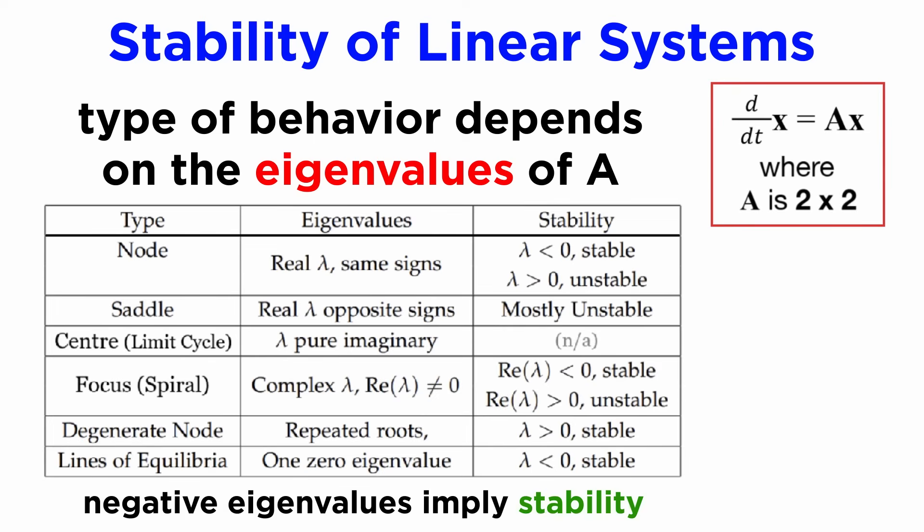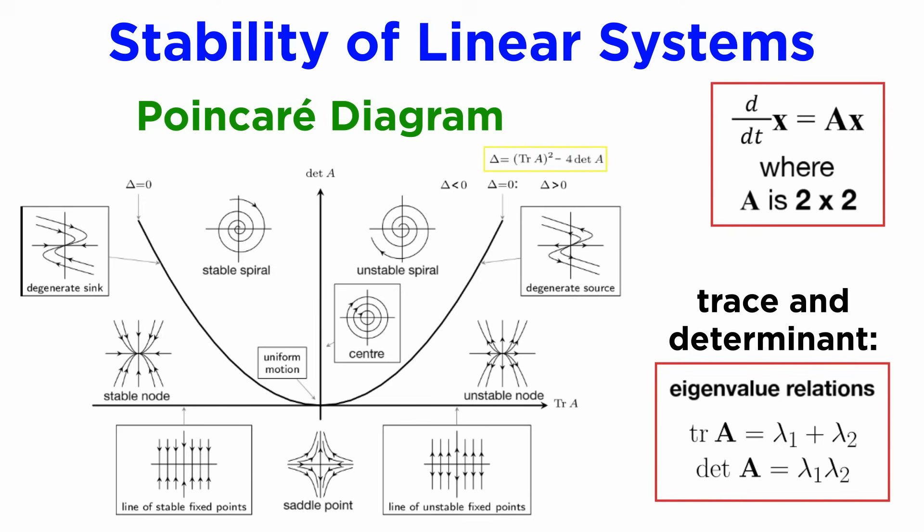Negative eigenvalues give exponential decay terms in the solution, while positive eigenvalues give exponentials that grow to infinity. For 2x2 linear systems, we can also plot the different types of system based on the trace of the matrix A, and the determinant of A, since these uniquely define the eigenvalues of A. This alternative way of representing the possible behaviors of our system is called a Poincaré diagram.